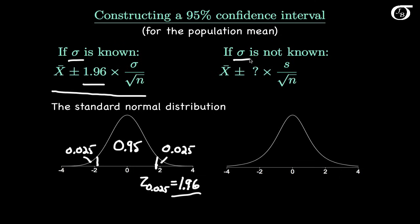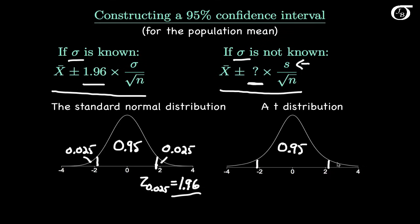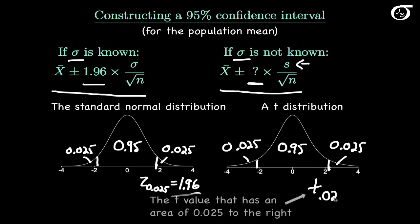But if σ is not known, we can't use it in our confidence interval formula, and we would have to replace it with the sample standard deviation. Then we should no longer use 1.96 — we shouldn't use a value based on the standard normal distribution; we need to use a value based on the t-distribution. We want to find the t value that gives an area to the right of 0.025. Because the t-distribution has greater area in the tails and greater variability, this t value is going to be greater than 1.96, and how much greater depends on the degrees of freedom.